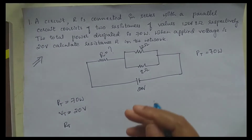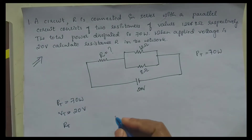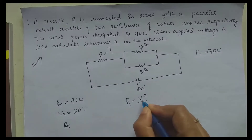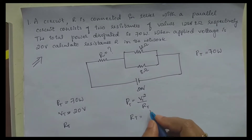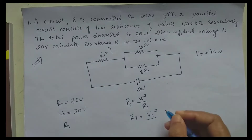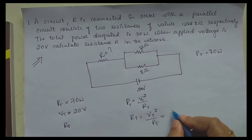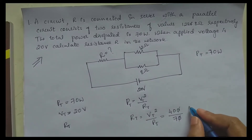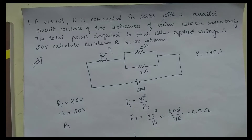Using P = V² / R, we find total resistance. Rearranging: RT = VT² / PT. VT squared is 20² = 400, and PT is 70. So RT = 400 / 70 = 5.7 ohms.